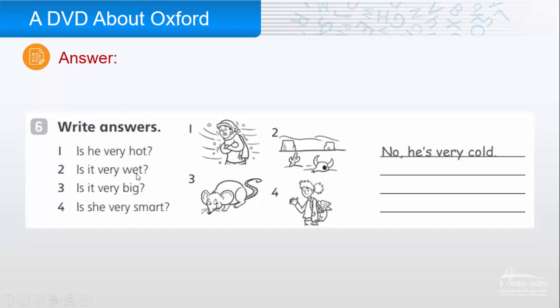Now let's answer the questions. One, is he very hot? Is this man very hot? No, he's very cold. Two, is it very wet? No, it's very dry. Three, is it very big? Is the mouth very big? No, it's very small. Four, is she very smart? No, she's very scruffy.